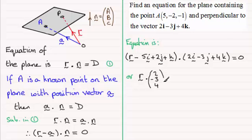This is equal to the position vector a dotted with n. Position vector of a in column vector form will be 5, minus 2, minus 1, dotted with the normal vector 2, minus 3, 4.